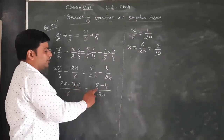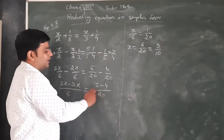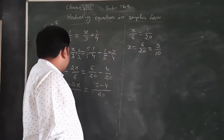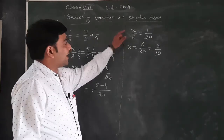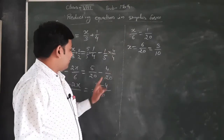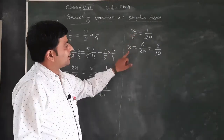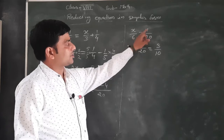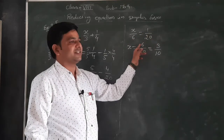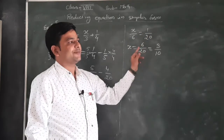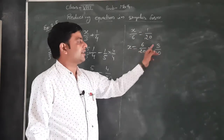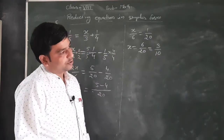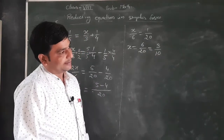With denominator 6 the same on both sides: 3x minus 2x gives x, and 5 minus 4 gives 1. So we have x/6 = 1/20. The 6 in division transposes to multiplication, giving 6×1/20 = 6/20, which simplifies to 20/3 — since both cancel by the table of 2, giving 10.